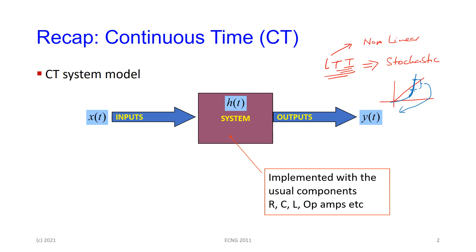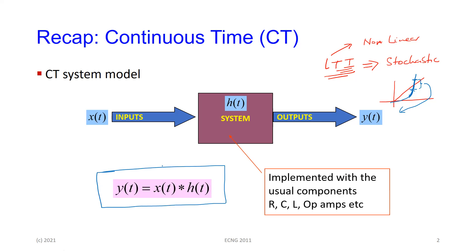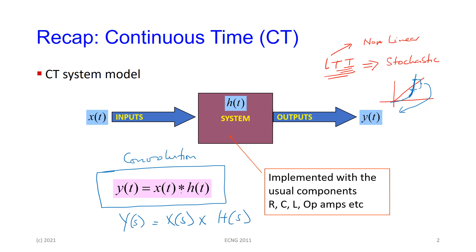The input-output relationship for all continuous time signals is a convolution. We can't do convolution manually — you could also do it using the Laplace domain. The Laplace converts a convolution into a multiplication process. We use this all the time when you simplify block diagrams, when you have H(S), G(S), G1, G2, and so on.